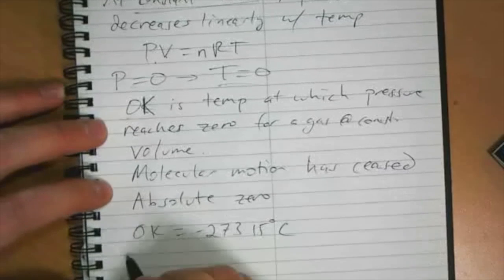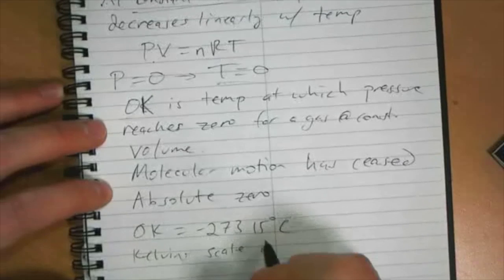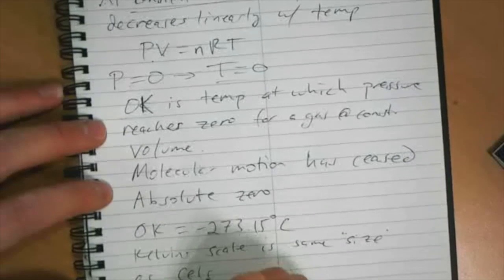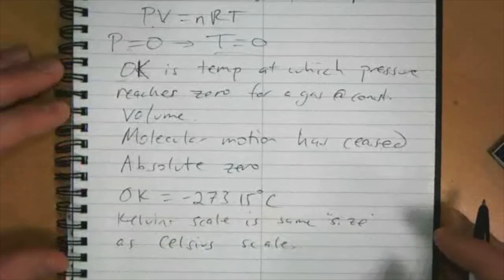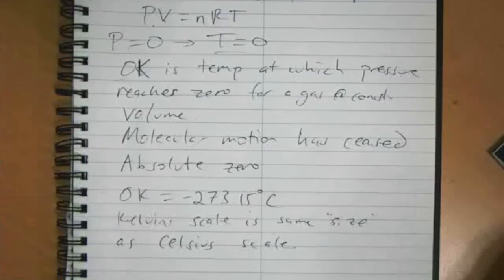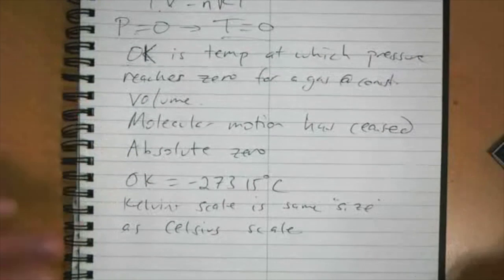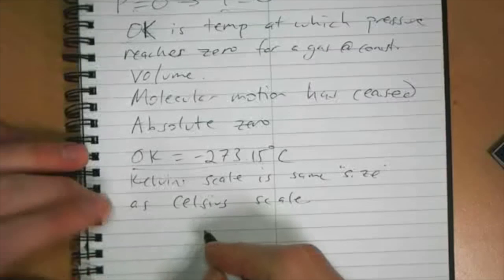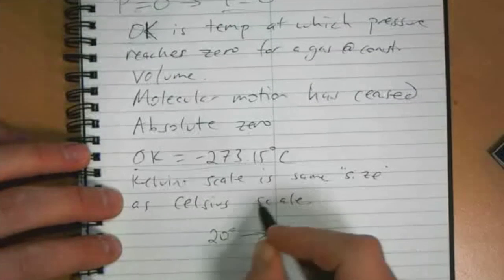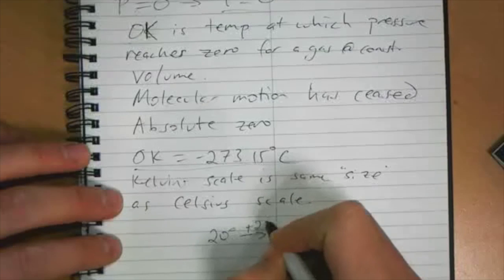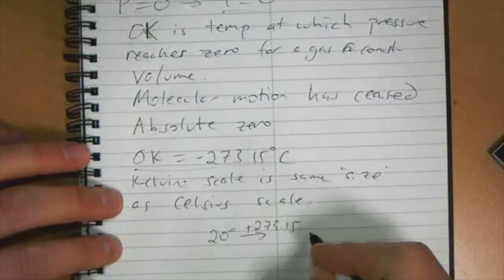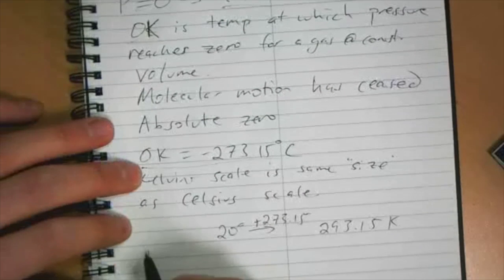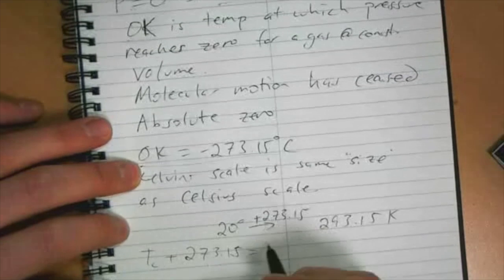The Kelvin scale is the same size as the Celsius scale. If the temperature changes by five degrees Celsius, it means it changes by five Kelvins as well, not degrees Kelvin, because Kelvin doesn't have degrees. If zero Kelvin is minus 273.15 degrees Celsius, then 20 degrees Celsius is 293.15 Kelvin. So temperature in Celsius plus 273.15 equals temperature in Kelvins.